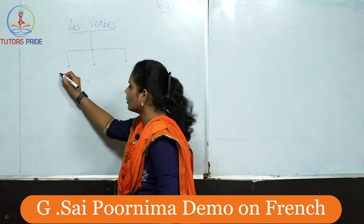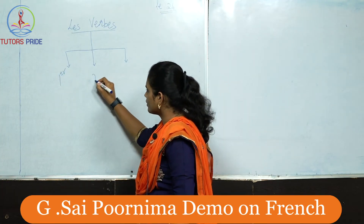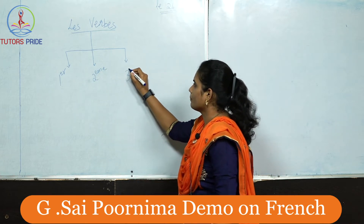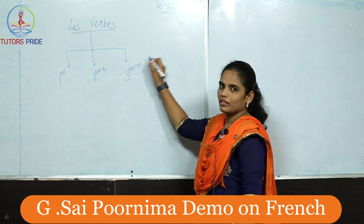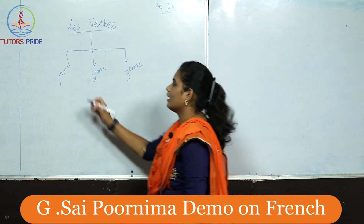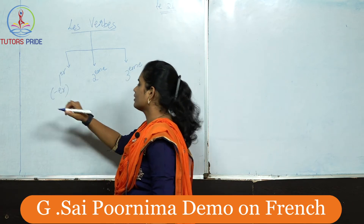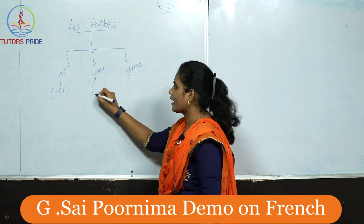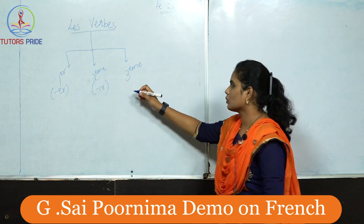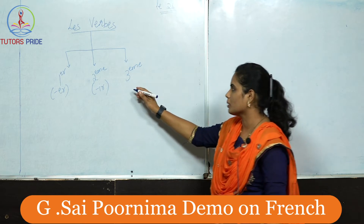Premier, deuxième, and troisième — first group, second group, and third group. The first group verbs end with ER, the second group verbs end with IR, whereas the third group verbs are mostly irregular verbs.